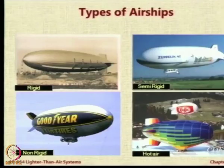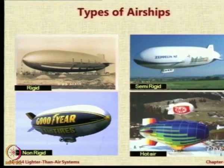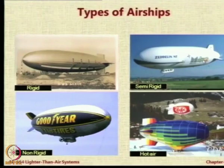Then we have the semi-rigid type, which is a combination or cross between rigid and non-rigid — there is an internal framework structure but the envelope is flexible. In the rigid type you have an external framework with gas bags inside. In the semi-rigid, the envelope itself is a gas bag but there is a structure inside.